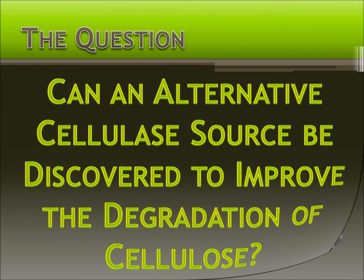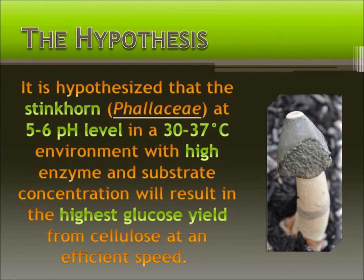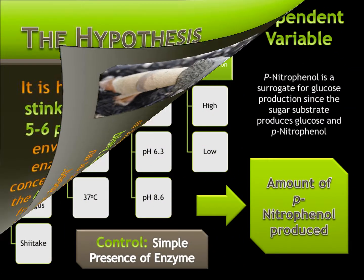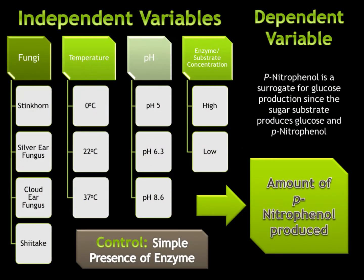The purpose was to discover feasible conditions for cellulase to degrade cellulose. The enzyme, temperature, pH, enzyme substrate concentration, and fungi were studied for their impact on the production of p-nitrophenol, a surrogate of glucose.